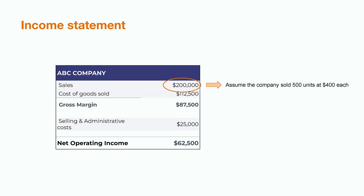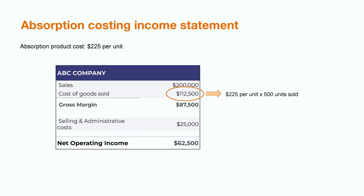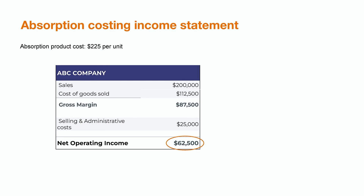Let's go back to the example and look at the operating income that would be reported on ABC company's income statement under both approaches. Let's assume that the company sold 500 units at $400 each this month, which works out to $200,000 of revenue. Whether we choose to use absorption or variable costing, this revenue number will stay the same. However, we'll see a difference on the cost side. Under absorption costing, the per unit product cost was $225 per unit. Multiplying by the 500 units sold gives us a cost of goods sold of $112,500. Taking $200,000 in revenue minus $112,500 cost of goods sold gives a gross margin of $87,500. Subtracting $25,000 of selling and administrative costs brings us to a total operating income of $62,500.